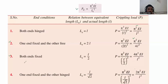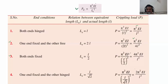Third boundary condition: both ends are fixed. LE is equal to L by 2. Just put LE equal to L by 2 in this equation. It will give pi square EI divided by L by 2 square, which equals 4 pi square EI divided by L square.